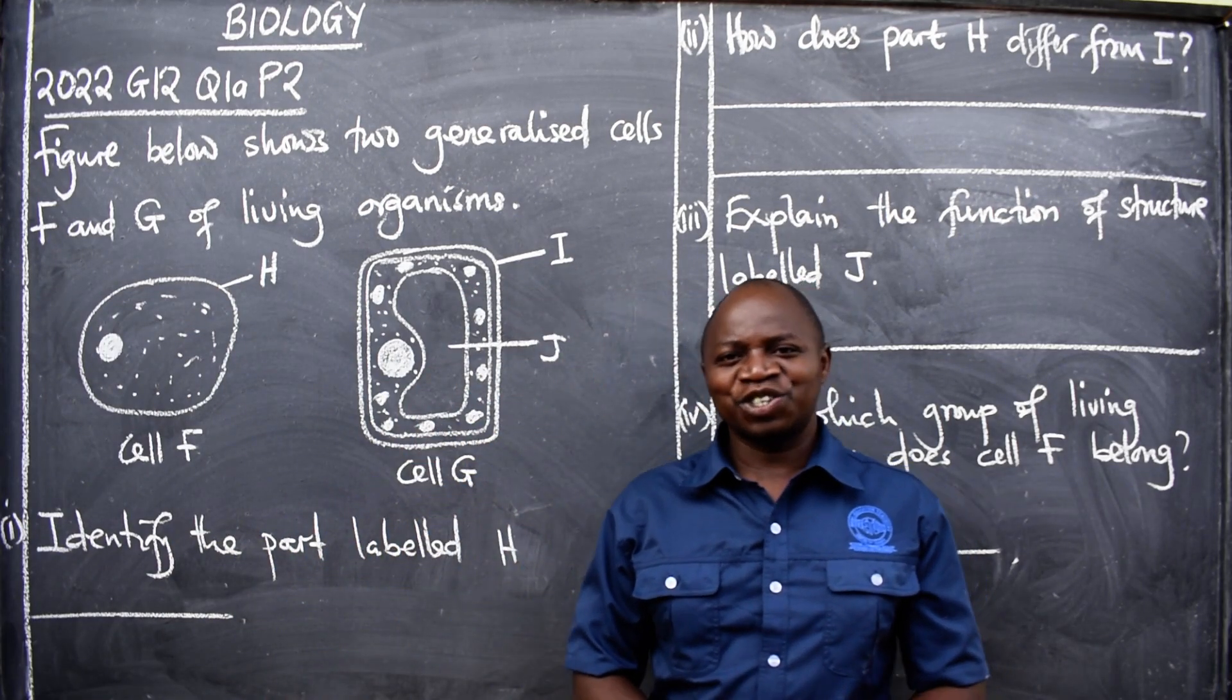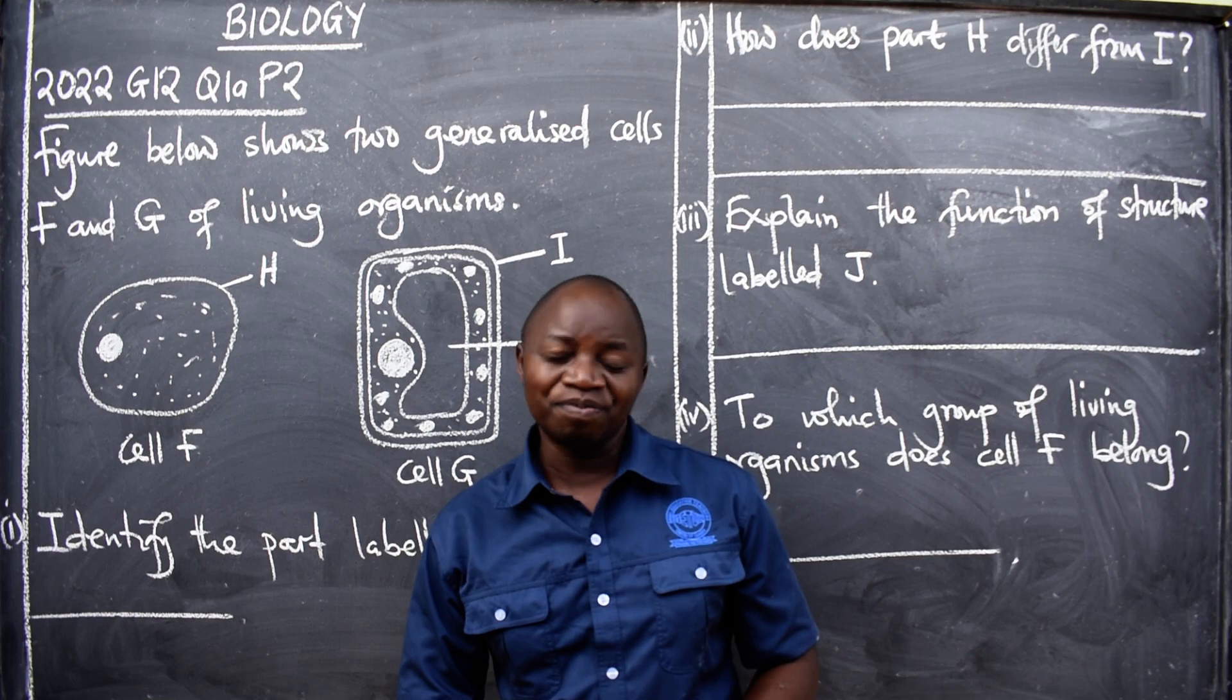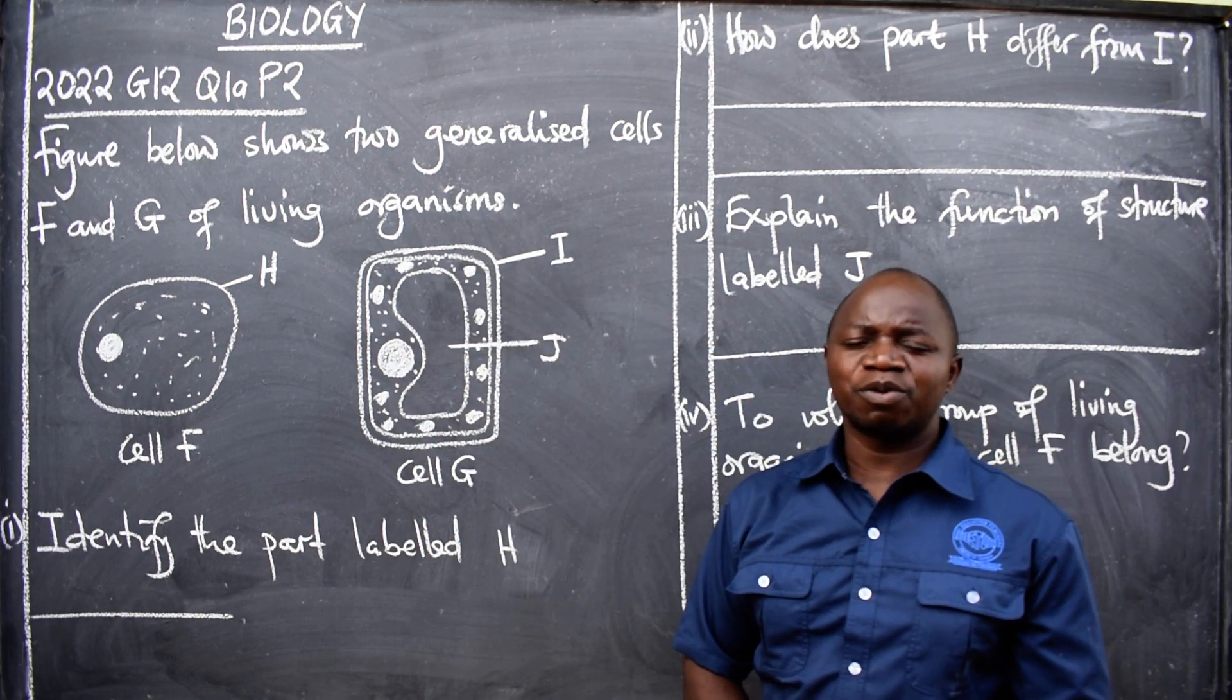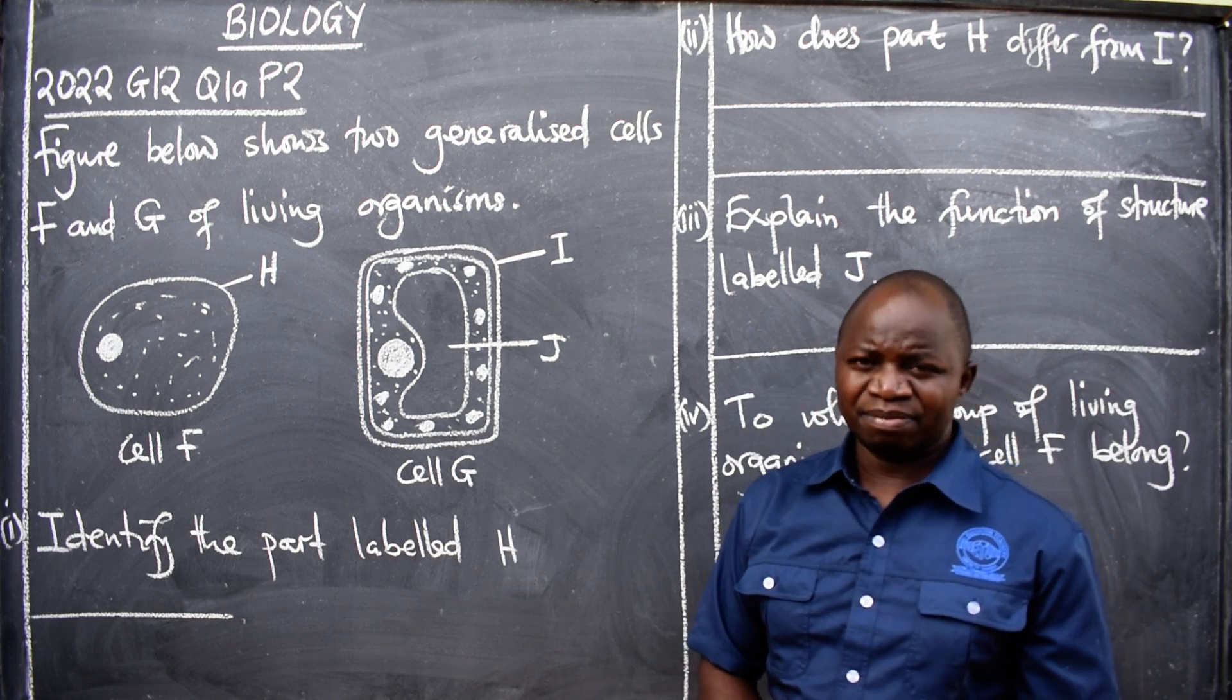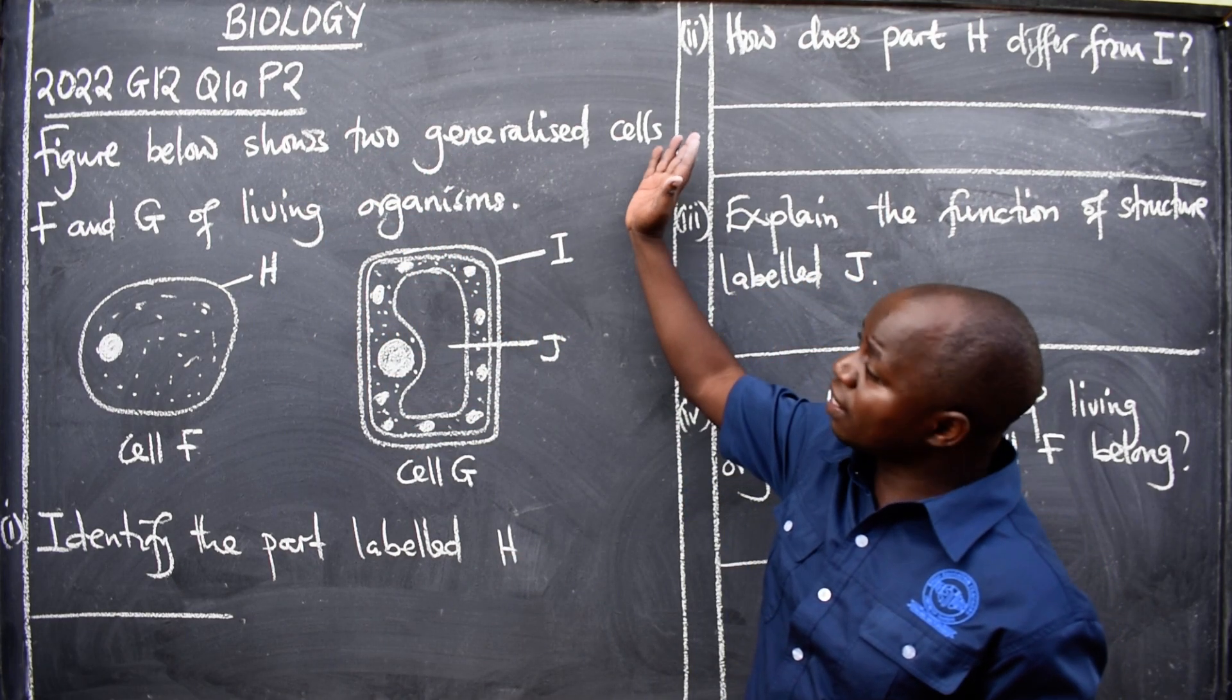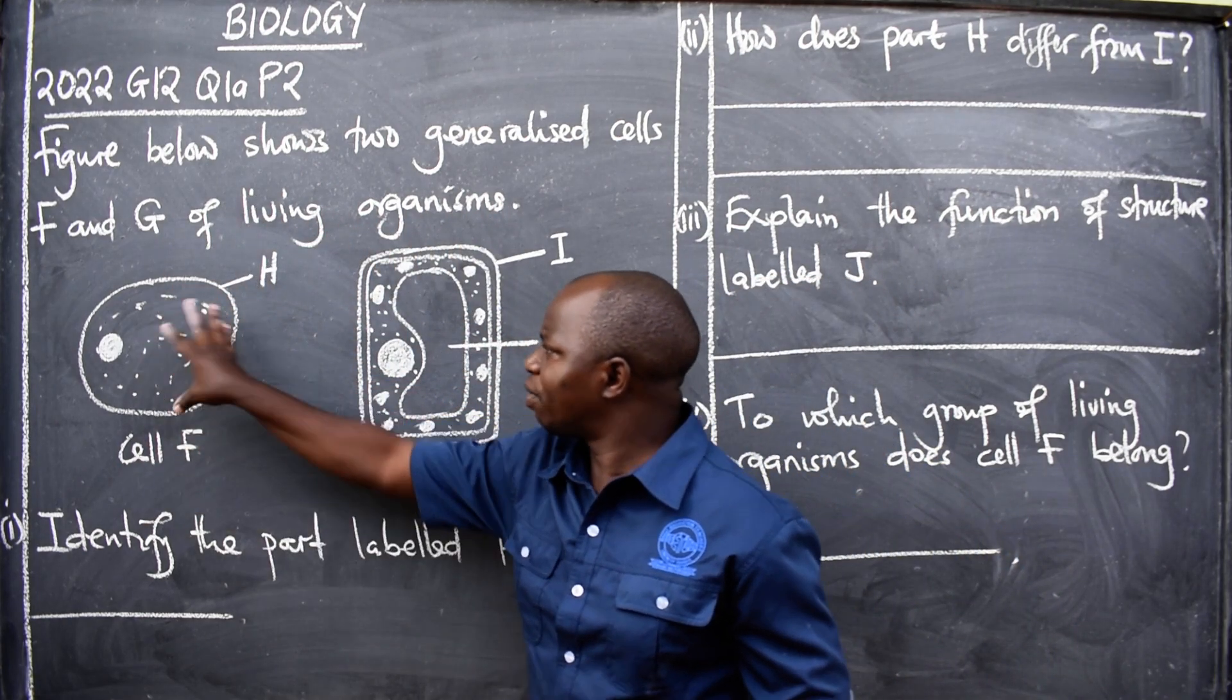Hello ladies and gentlemen, hope you are well. This is biology. In this video we want to look at this question. It is coming from 2022 grade 12 paper 2, and this was question 1a. The question reads: figure below shows two generalized cells F and G of living organisms.